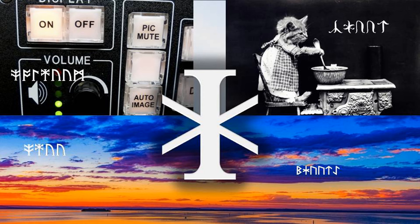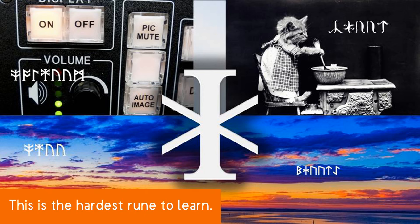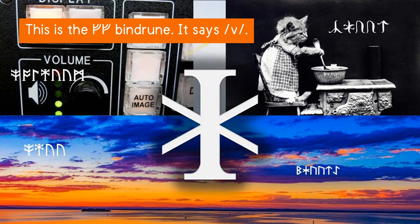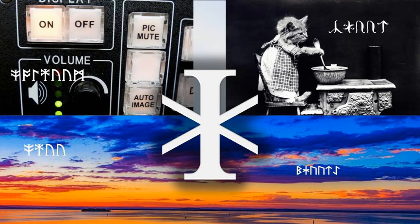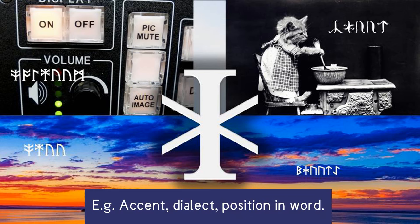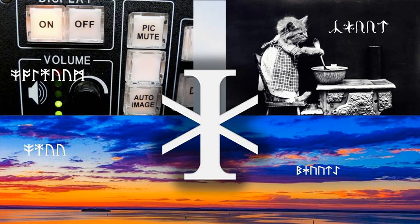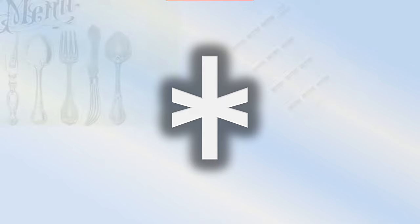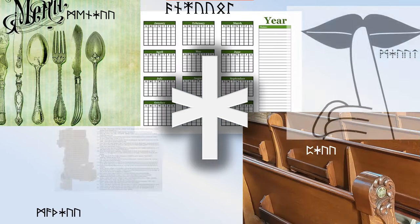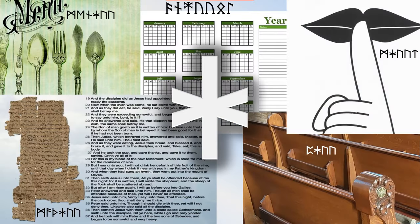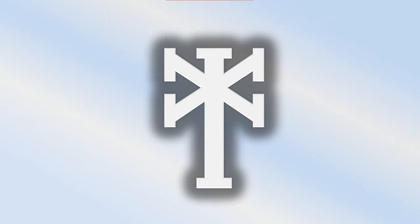The rune Ior is tricky. It represents a sound which shifts between a consonant and a vowel depending on a variety of factors. After a consonant, it represents a yod, as in the words view, beauty, cute, volume, fjord, canyon, brilliant, billion, onion, menu, mute, pew, Matthew, and annual.